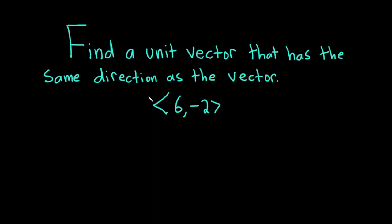In this video, we're going to find a unit vector that has the same direction as the vector whose first component is 6 and its second component is negative 2. Let's go ahead and carefully work through this solution.